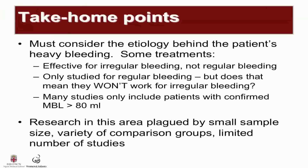The take-home points for the treatment of abnormal uterine bleeding: first, you must consider the etiology behind the patient's heavy bleeding. Some treatments are effective for irregular bleeding and not regular bleeding. Some are only studied for regular bleeding, but does that mean they won't work for irregular bleeding? Many studies only include patients with confirmed menstrual blood loss of 80 milliliters per cycle, which may not reflect the population clinicians are caring for in practice. Research in this area is also plagued by small sample size, variety of comparison groups, and limited number of studies, so clinicians need to be on the lookout for new published literature.